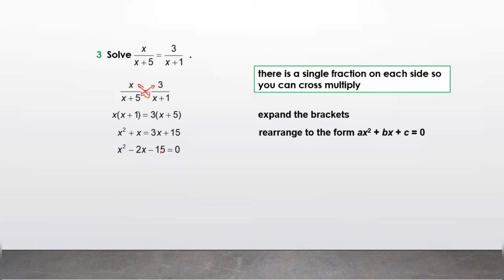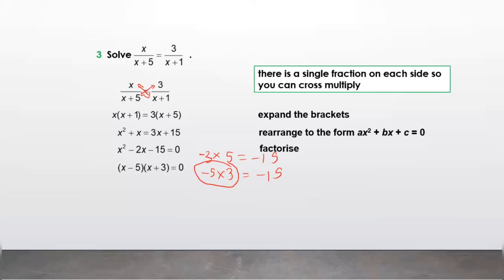We need to find factors of minus 15 such that their sum is minus 2. Minus 3 times 5 gives minus 15, and minus 5 times 3 also gives minus 15. Which pair adds up to minus 2? Minus 5 plus 3 is minus 2. So our factors are (x minus 5) and (x plus 3).